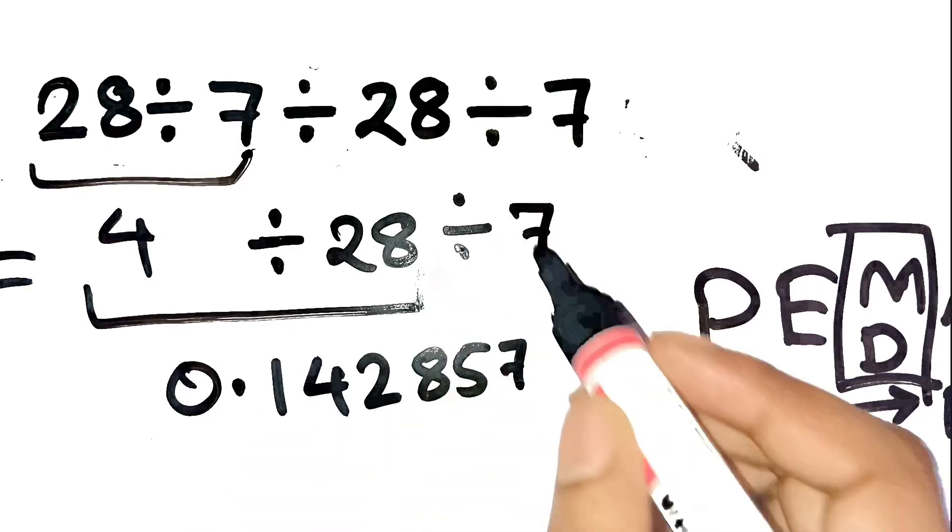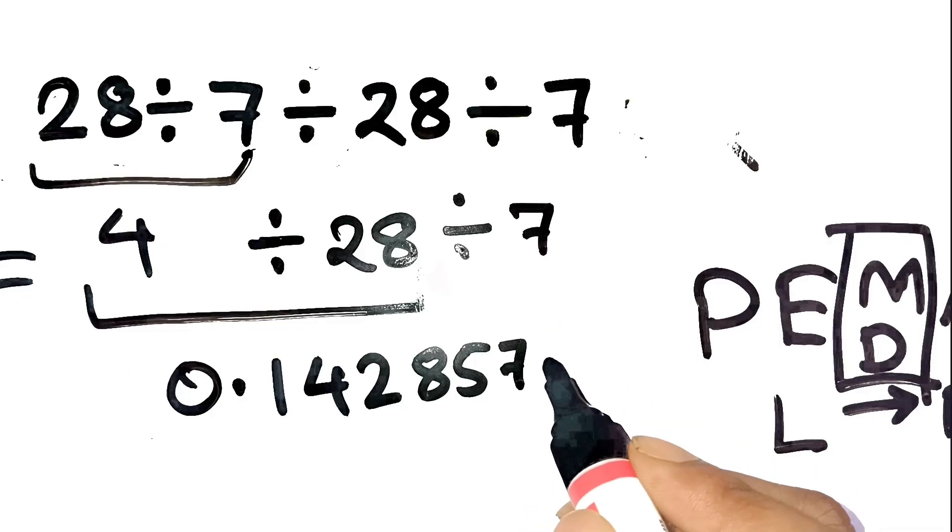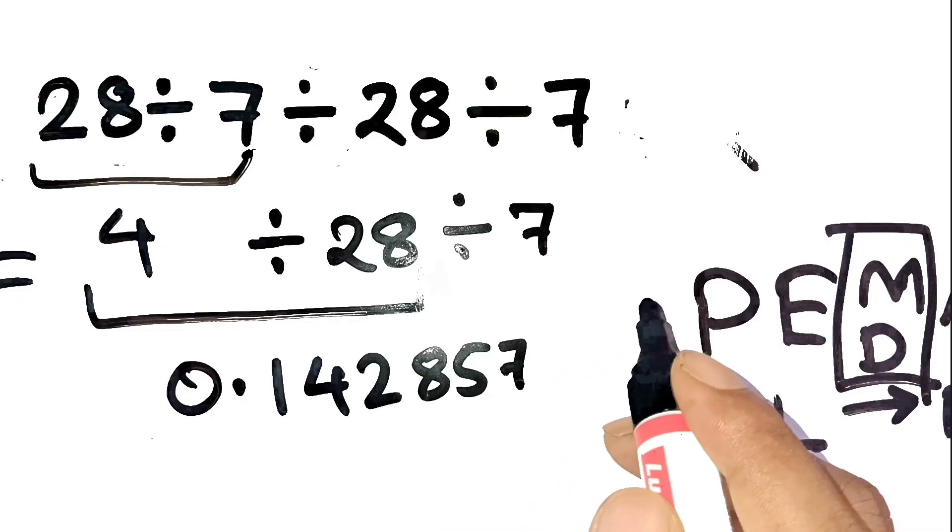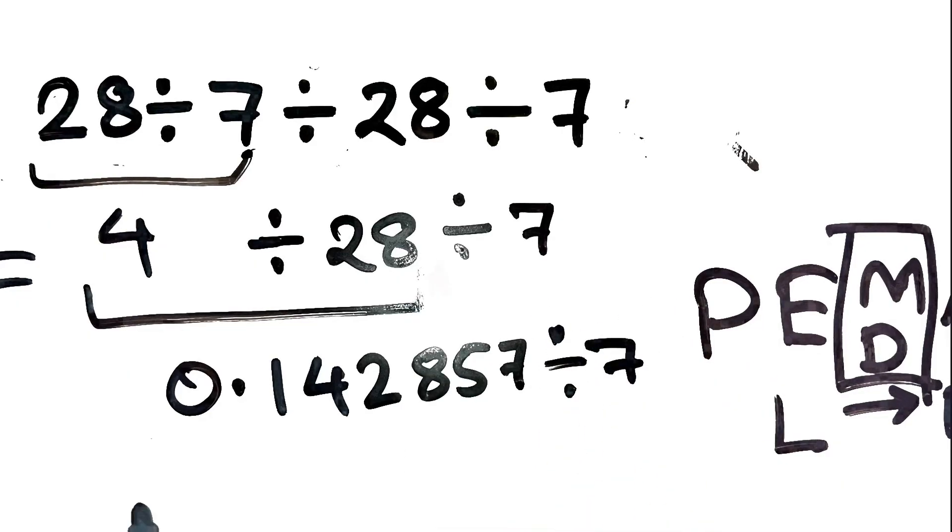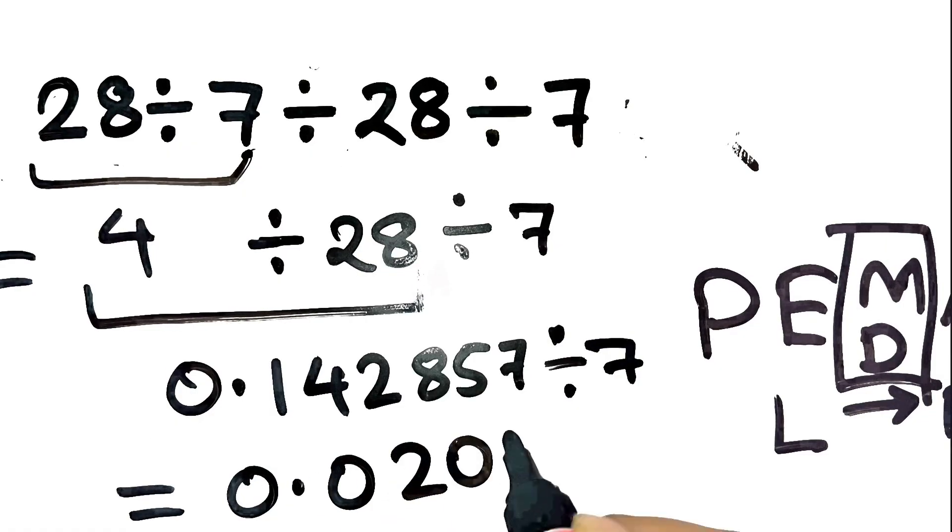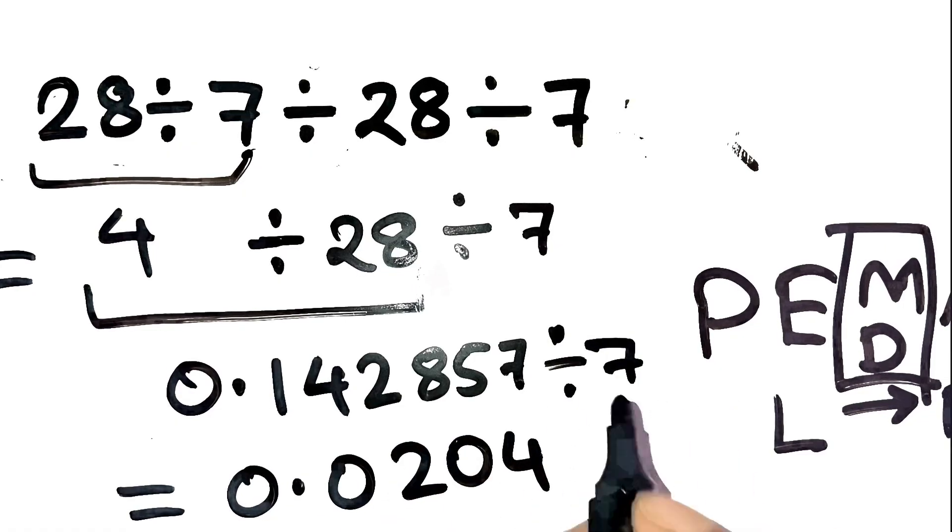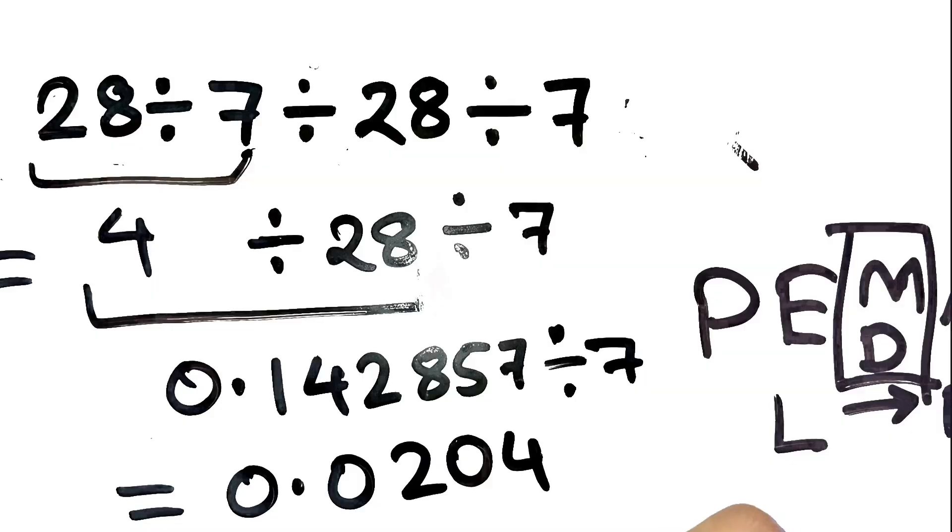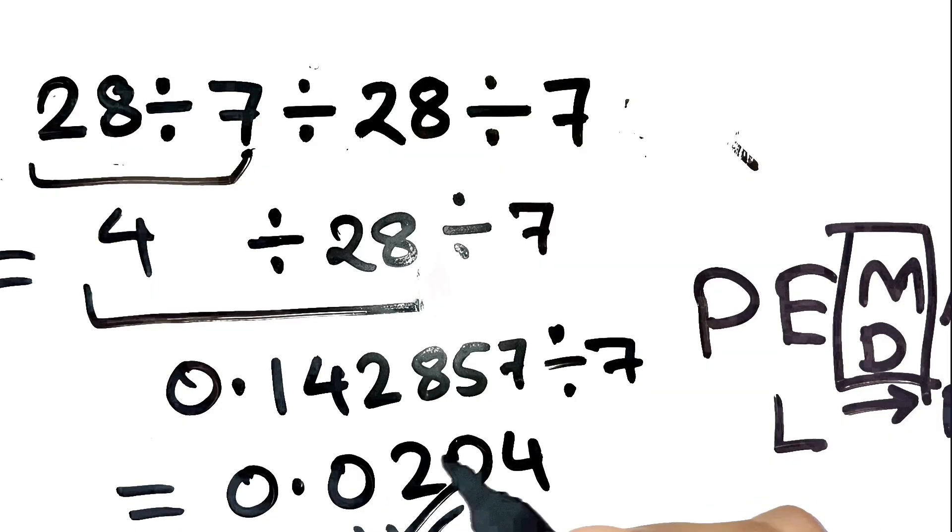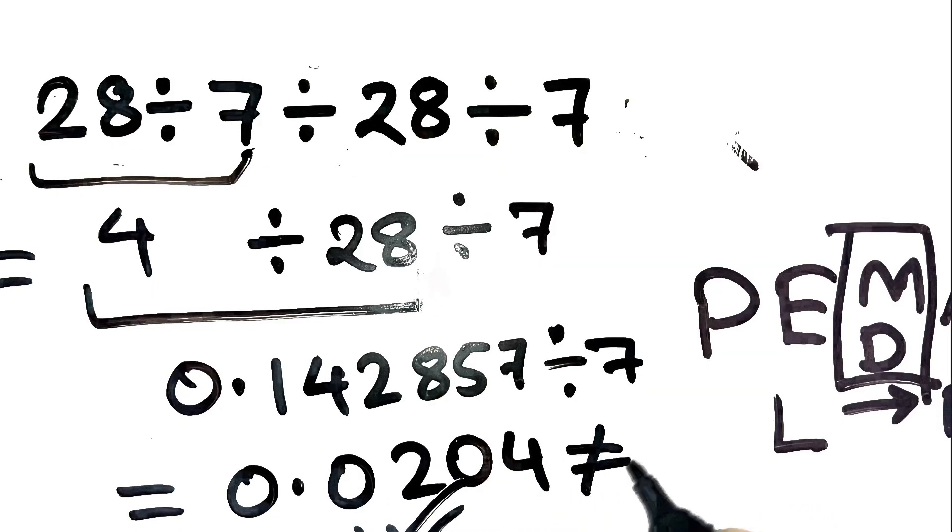And finally, 0.142857 divided by 7, which gives us approximately 0.0204. Yeah, way smaller than 1, right? So the correct answer is approximately 0.0204, not 1.